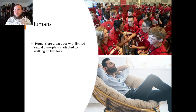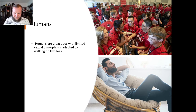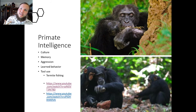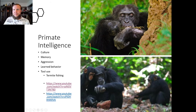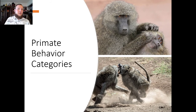Humans are also great apes with limited sexual dimorphism, adapted to walking on two legs, and we also have large social groups. Primates are very intelligent and they have culture — learned behaviors passed down from generation to generation through memory. They can also be aggressive. Examples of tool use include creating a stick for termite fishing and an older chimp teaching an infant how to crush nuts to get the nut meat. This is an example of learned behavior. There are two videos on primate intelligence available for viewing.